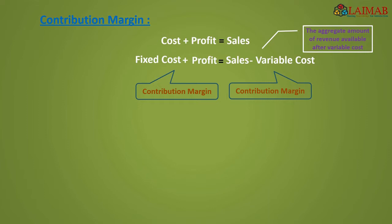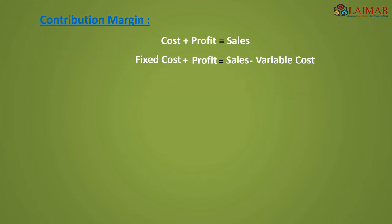The contribution margin is the aggregate amount of revenue available after variable cost. So to determine the sales price of the product, variable cost is very important. This excess aggregated revenue is used to cover fixed cost and provide profit. If a loss is incurred, the result would be fixed cost minus loss equals sales minus variable cost.